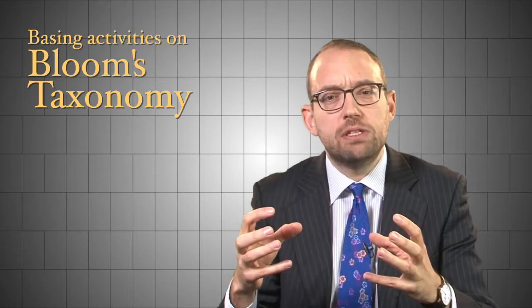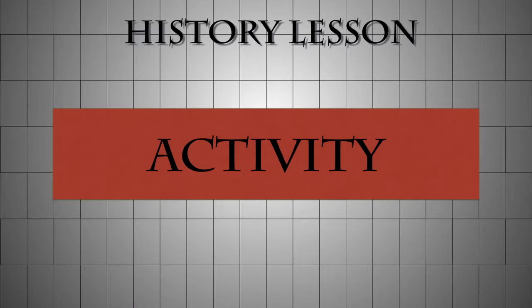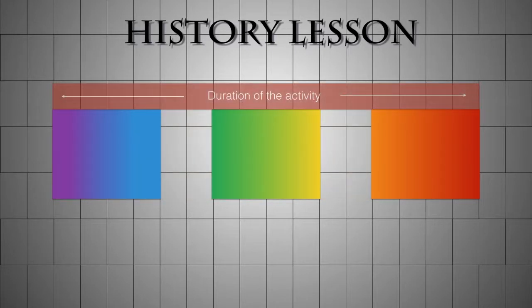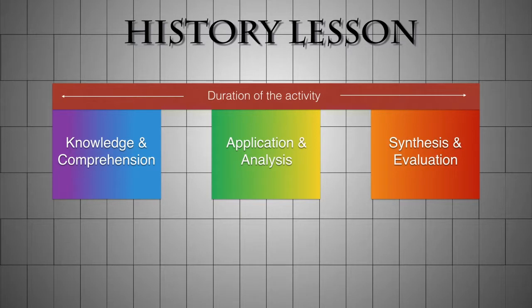One technique I really like is where you plan an activity and compose it of a series of different elements, and those elements reflect Bloom's Taxonomy. For example, we might have a history lesson where the main activity takes up quite a large portion of the lesson, but within that activity we have three subsections. The first section is concerned with knowledge and comprehension, the second with application or analysis, and the third with synthesis or evaluation.